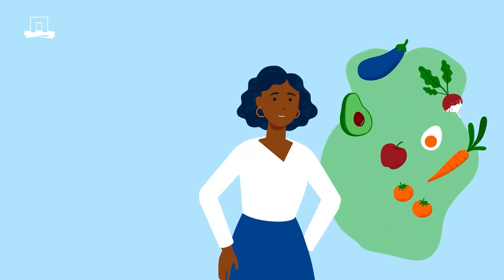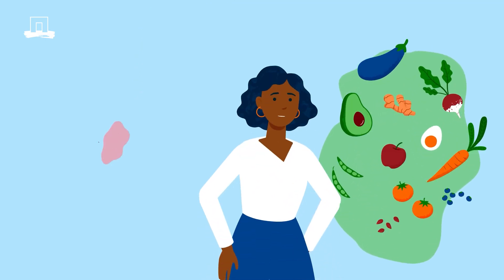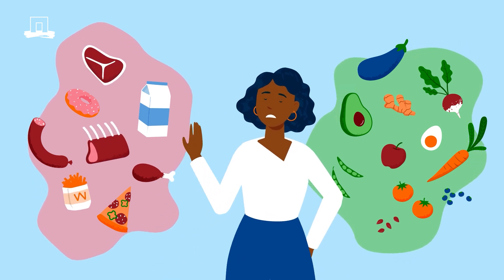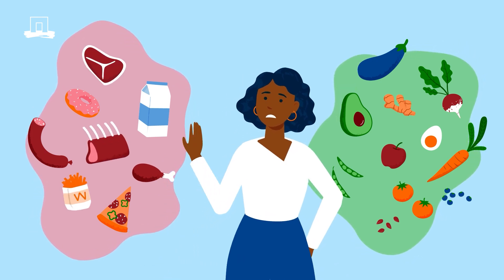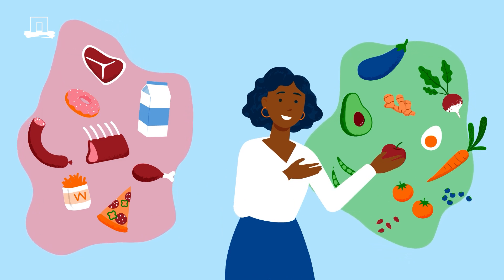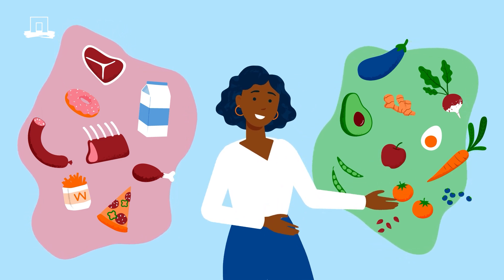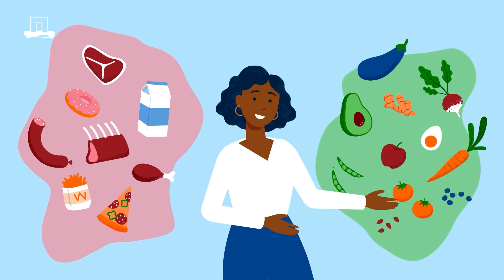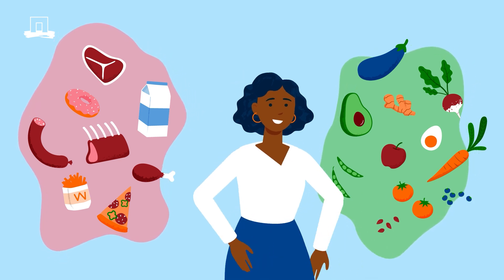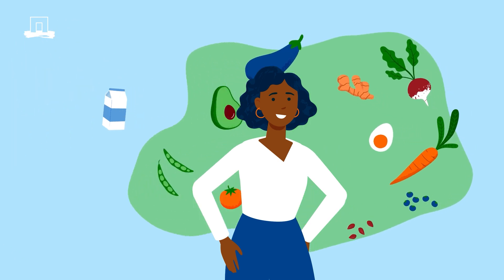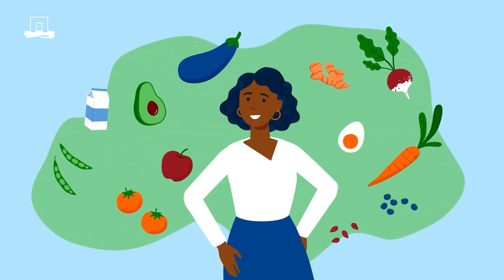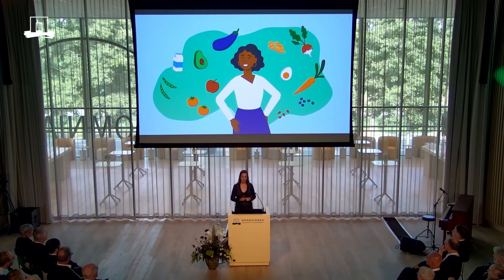The second principle is to make sure that we produce enough healthy food for everyone — producing the nutrients that we need on a daily basis, in terms of protein or vitamin B12. But it also means that we consume the right foods: not too much processed red meat, not too much sugar, and enough vegetables.